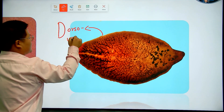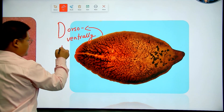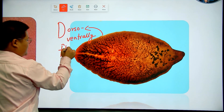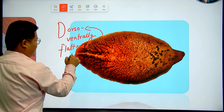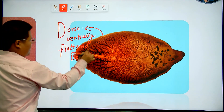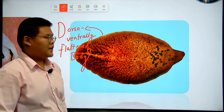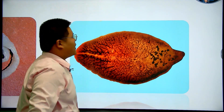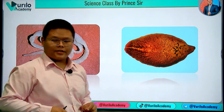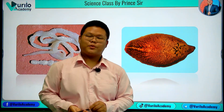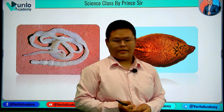These organisms are dorso-ventrally flattened — not so ventrally flattened type of body. So this is what we covered about Phylum Platyhelminthes. In the next lecture, we are going to continue with Phylum Aschelminthes.